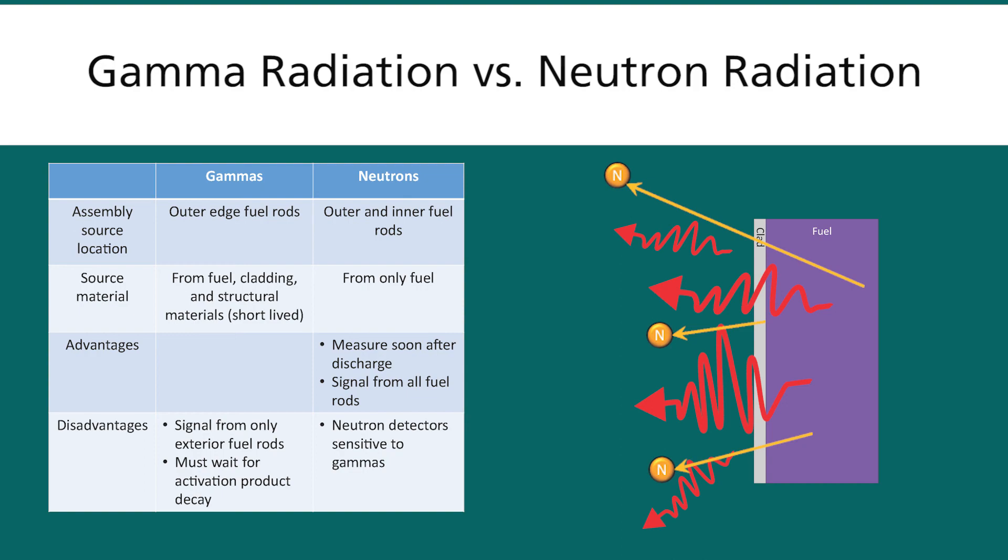However, there are some disadvantages for neutrons. Neutron detectors are sensitive to gamma rays so you have to take that into account when you are doing interrogation of the fuel assembly. At least non-fission chamber neutron detectors.